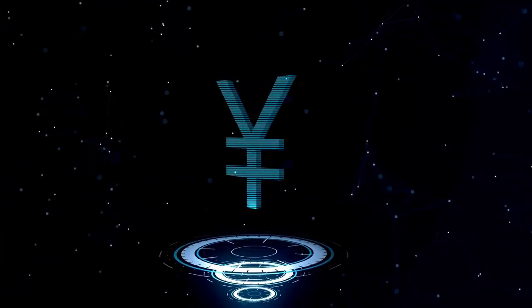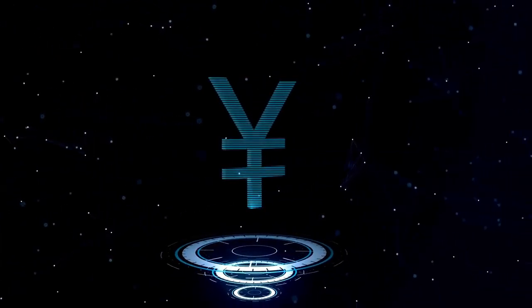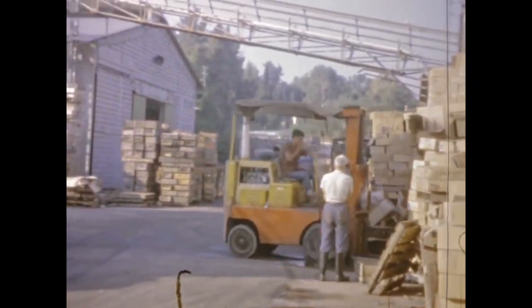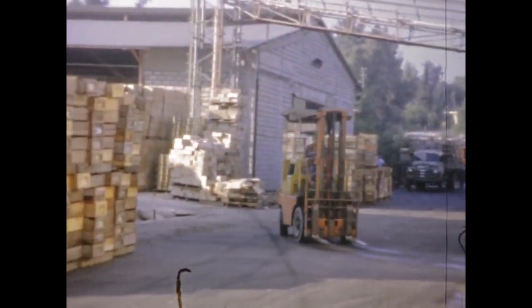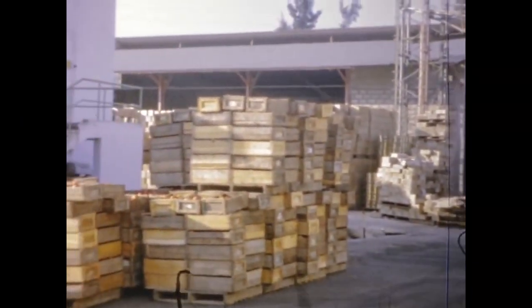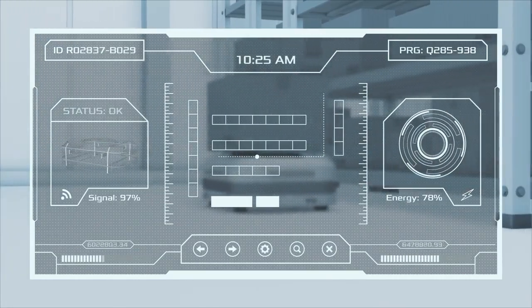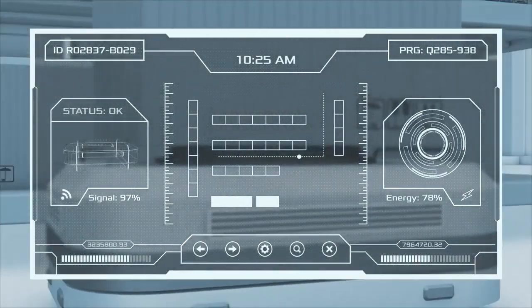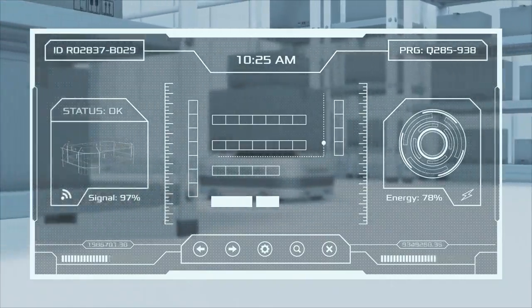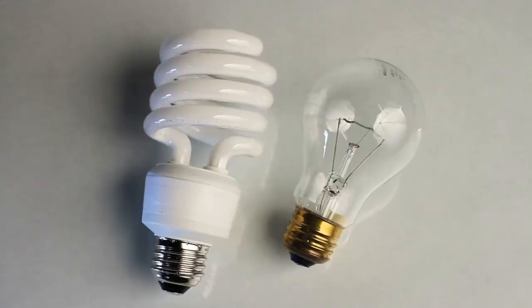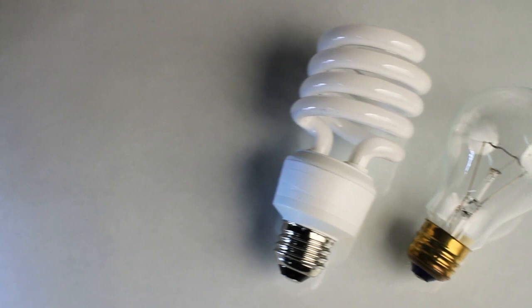Originally designed to last just five years, Voyager 2 has far surpassed expectations, continuing to transmit data over four decades later. Its longevity is a true reflection of the ingenuity and skill of the engineers who created it. Even in its advanced years, the Voyager 2 team has cleverly managed its power, shutting down non-essential systems to keep its instruments operational.